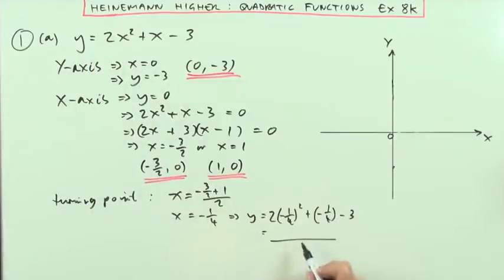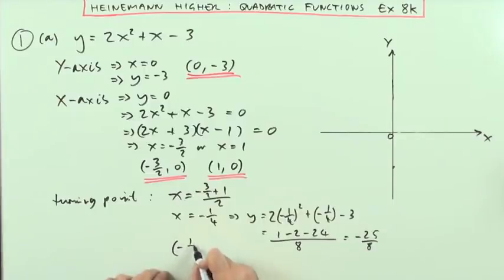So it's going to be 2 times negative 1 quarter squared plus the negative 1 quarter minus 3. So that's going to be then, well that's going to be a 16th, so that's an 8th, so it's all out of 8ths. So I've got 1 8th minus 2 8ths minus 24 8ths, so that's going to be negative 25 8ths. So there's the turning point, negative 1 quarter, negative 25 8ths.